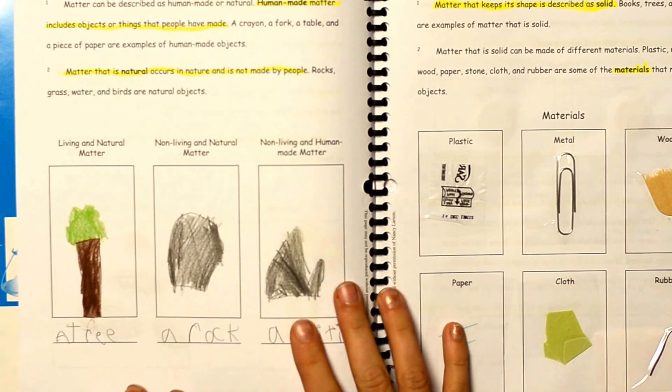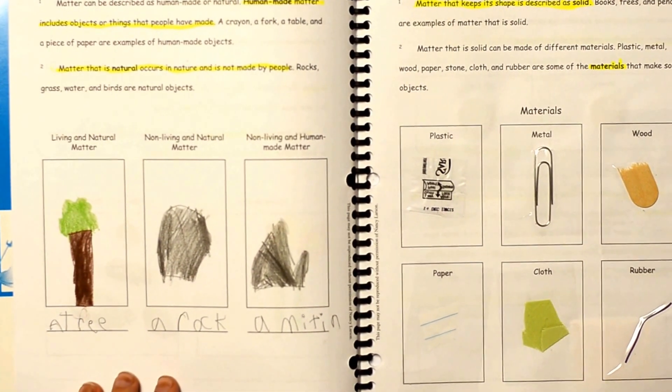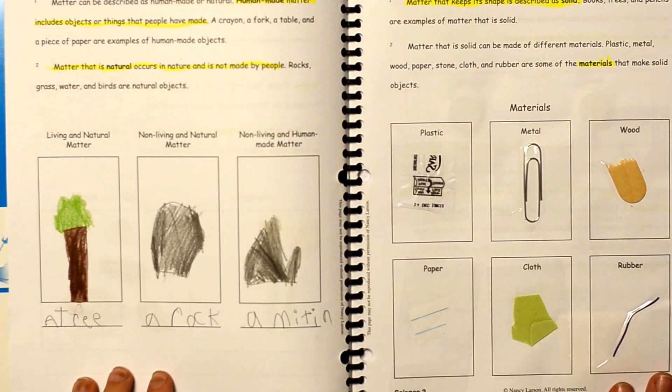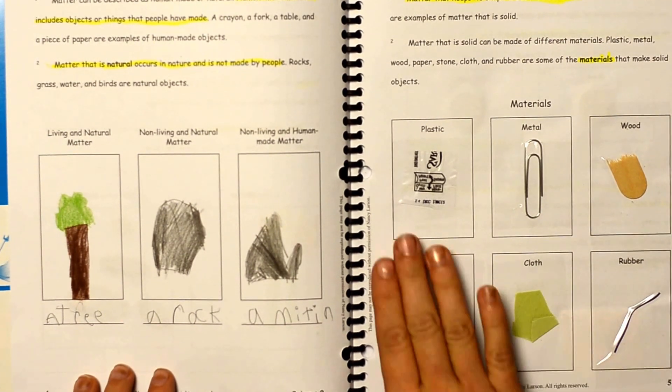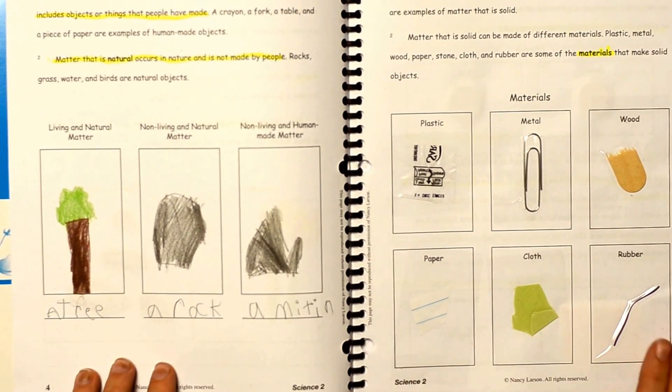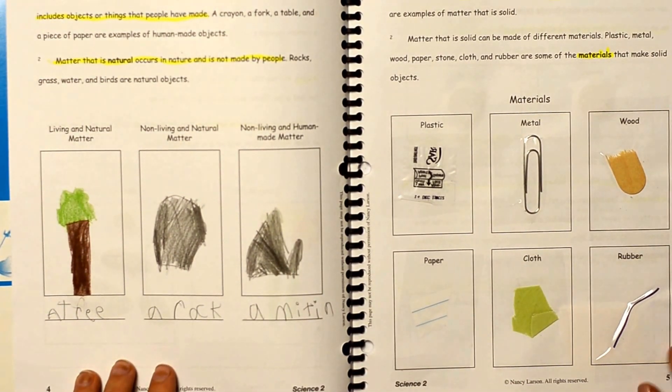In some lessons you'll be rounding up materials from around your house. On this page we were talking about solids and the different kinds of materials that make up a solid. We have plastic, metal, wood, and we rounded up all these things and taped them into his book.